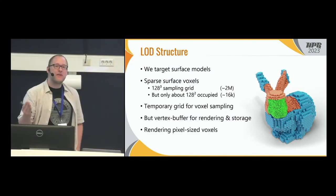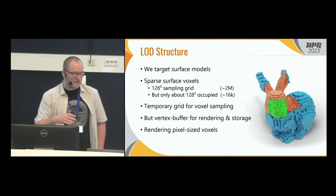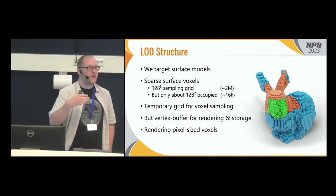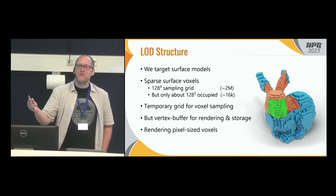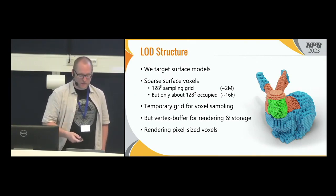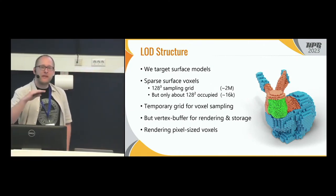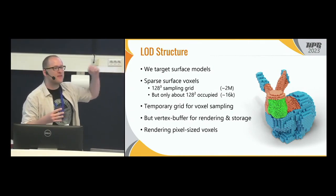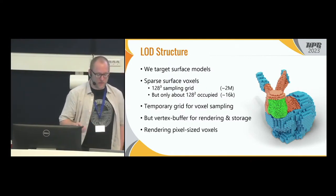During generation, we have a sampling grid with a size of 128³ voxels. The sampling grid is only needed when we generate the voxels for a node, and then it's discarded right away. Instead, we store the voxels in a vertex buffer using their coordinates and color values. During rendering, we target rendering about pixel-sized voxels — just one pixel large, or maybe 2×2 pixels for more rendering performance.